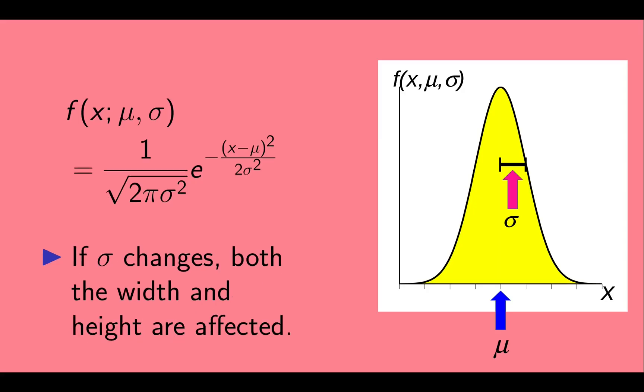If sigma changes, both the width and the height are affected. Sigma appears twice in the formula. The sigma in the exponent controls the width of the peak, and the sigma in the factor out front controls the height. If sigma changes, the change in height counteracts the change in width to keep the area under the curve 1.